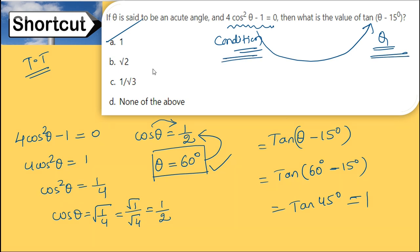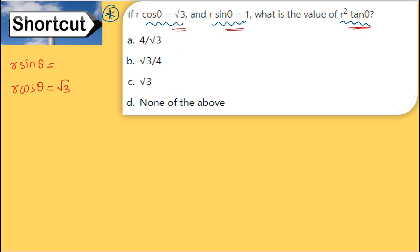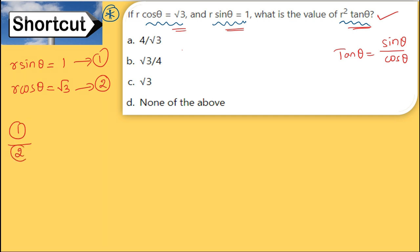Next problem: r cosθ = √3 and r sinθ = 1. Find r² tanθ. Since tan θ = sin θ / cos θ, divide equation 2 by equation 1.